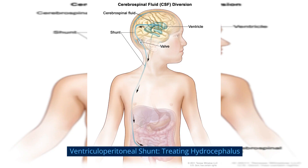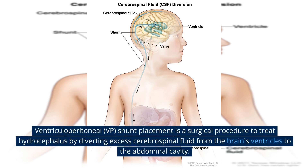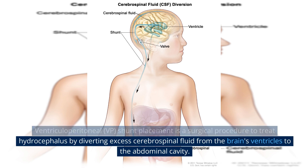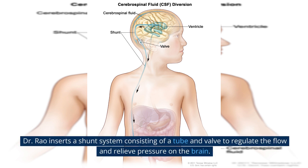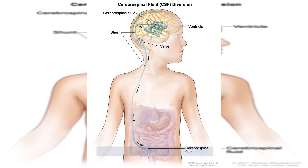Ventriculoperitoneal Shunt – Treating Hydrocephalus. Ventriculoperitoneal shunt placement is a surgical procedure to treat hydrocephalus by diverting excess cerebrospinal fluid from the brain's ventricles to the abdominal cavity. Dr. Rao inserts a shunt system consisting of a tube and valve to regulate the flow and relieve pressure on the brain.